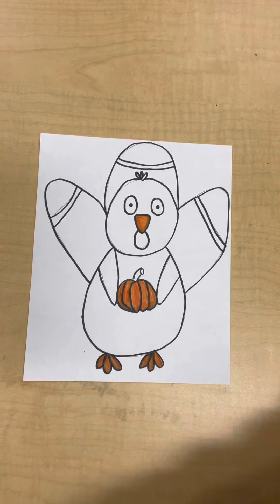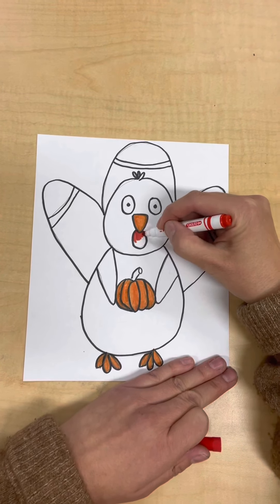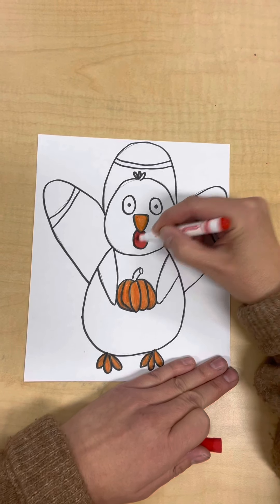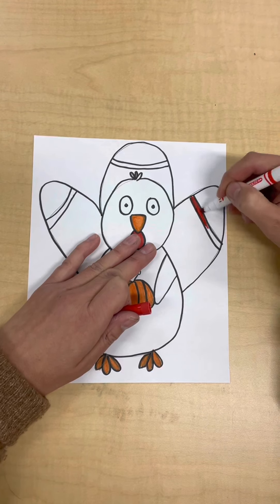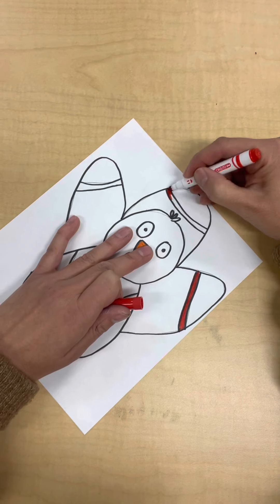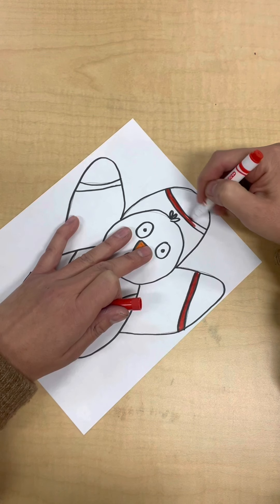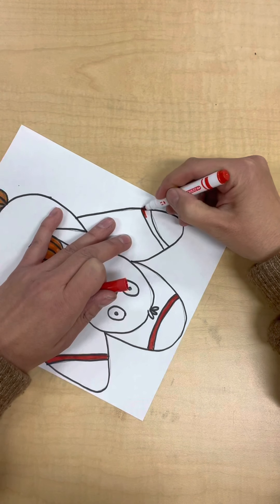And I'll take my red and do his little gobbler. And I'm going to do this here, just give him some different color texture. Color right in there and right in here.